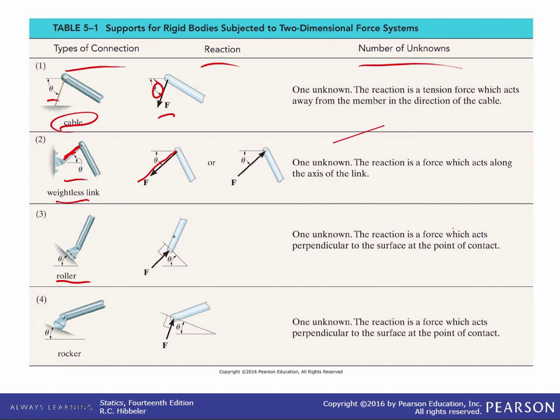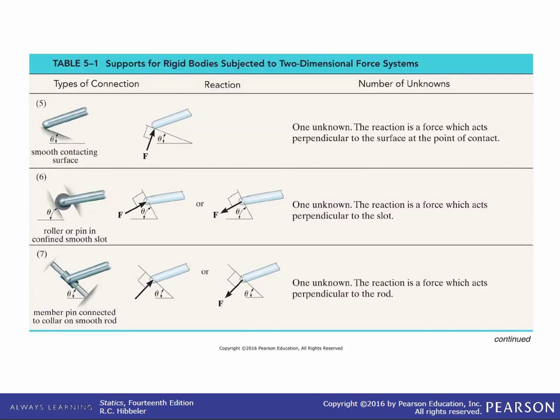Next we have a roller and since this one can only restrict movement in that direction the force is also directed in that direction. We have a rocker here this is similar to a roller in that it only prevents translation in that direction so therefore the force has to be in the same direction. We have smooth contacting surfaces for exactly the same reasons it prevents translation in this direction so the force is also in that direction. We have a roller or pin confined in a smooth slot so again since this one can only restrict translation in that direction the force is also in that direction and here we have a member pin connected to a collar on a smooth rod and for similar reasons the force is also in the same direction as the member pin.